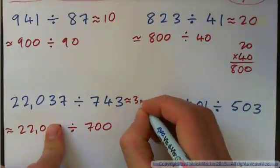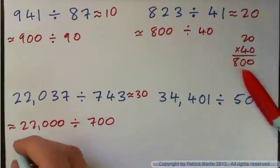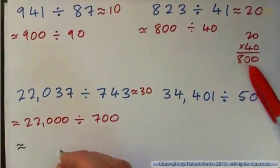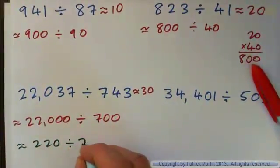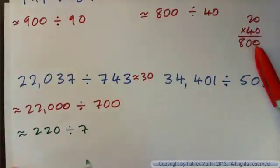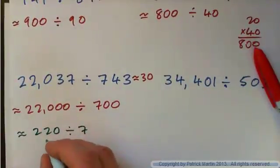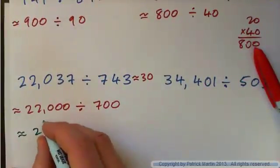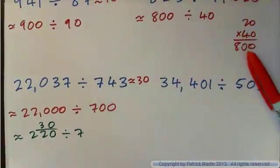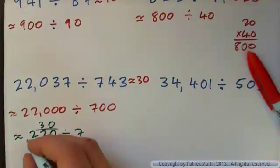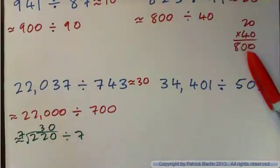Does that make sense? If I write it out further, it's basically 220 divided by 7. Seven into 22 goes about three times, and 7 into 0 goes 0 times. So you're essentially doing 7 into 220.